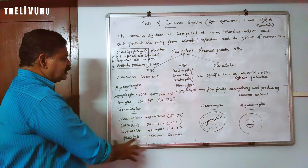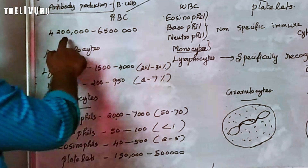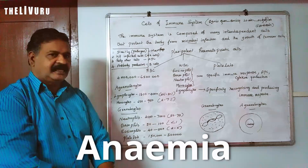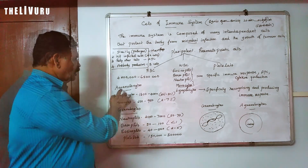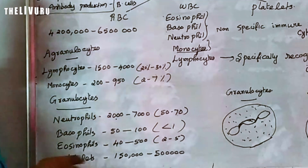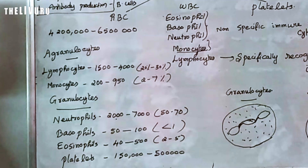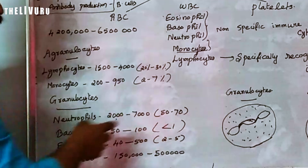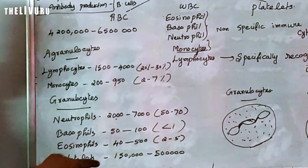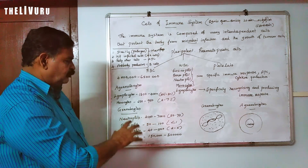Now we are going to see the number of particular cells present in 1 milliliter of blood. RBC: 4.2 to 6.5 million. For agranulocytes — Lymphocytes: 1500 to 4000, which is 20 to 30%. Monocytes: 200 to 950, which is 2 to 7%. For granulocytes — Neutrophil: 2000 to 7000, which is 50 to 70%. Basophil: 50 to 100, less than 1%. Eosinophil: 40 to 500, which is 2 to 5%. Platelets: 150,000 to 5 lakhs.